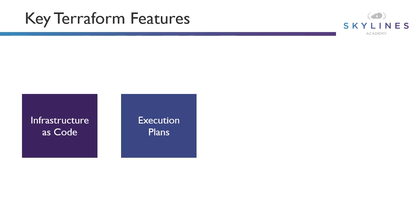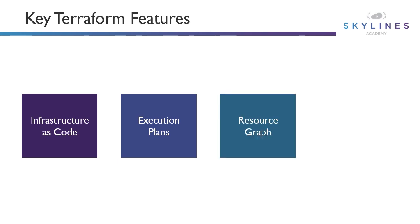The execution plan lets you avoid any surprises when Terraform goes out and starts to manipulate and change things in your environment. Thirdly, we have a resource graph. Terraform builds a graph of all your resources and parallelizes the creation and modification of any non-dependent resources, building infrastructure as efficiently as possible. For example, if you deploy two virtual machines that aren't dependent on each other, it can build those in parallel. If a database service had to be up and running before the next service, Terraform will understand that based on the resource graph.